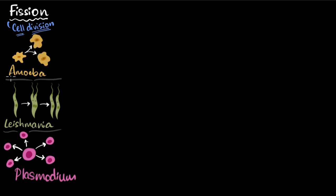So in unicellular organisms like amoeba, leishmania, plasmodium, the one that causes malaria, when they divide, the cells divide, that itself is reproduction.